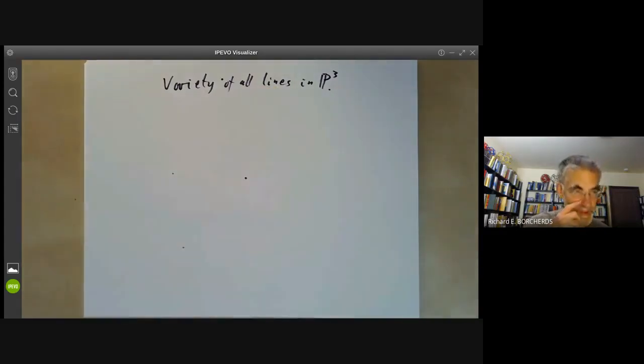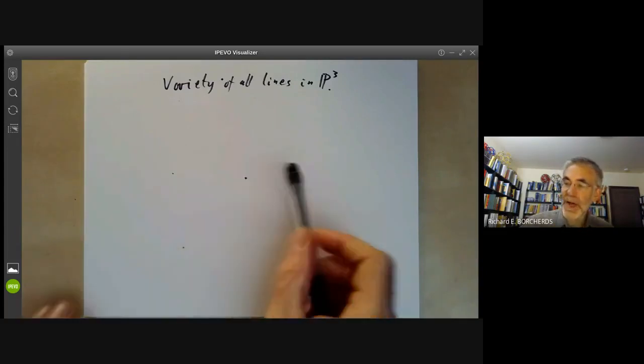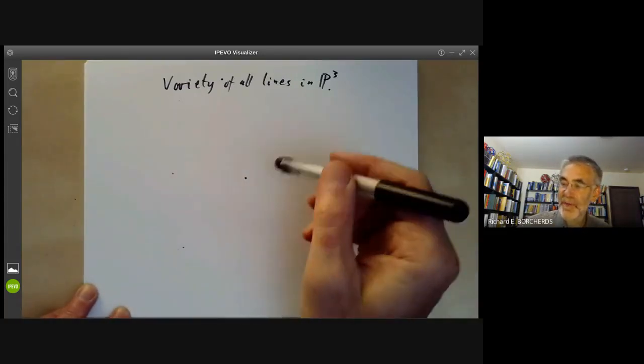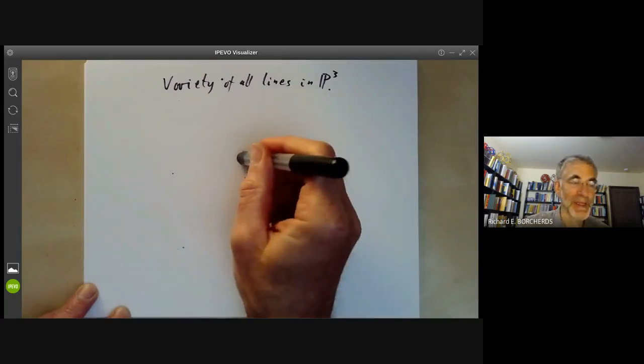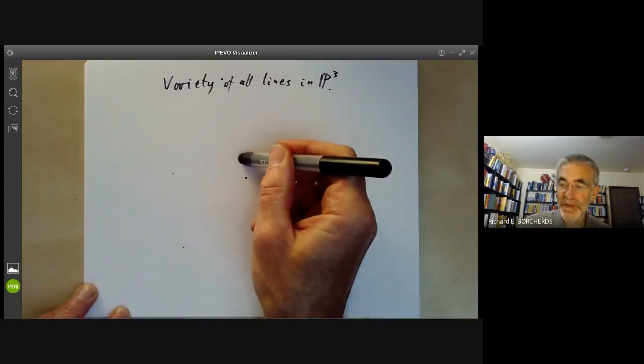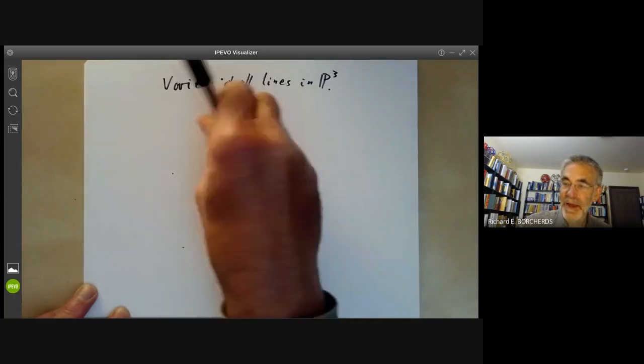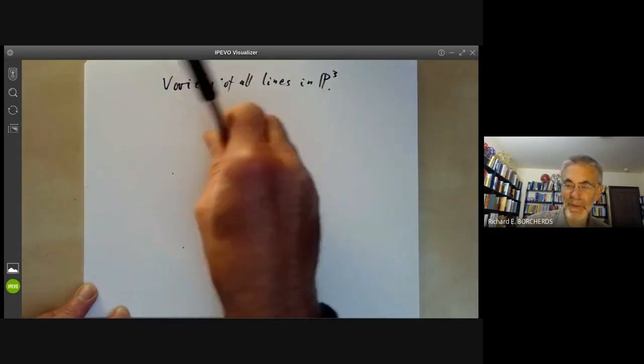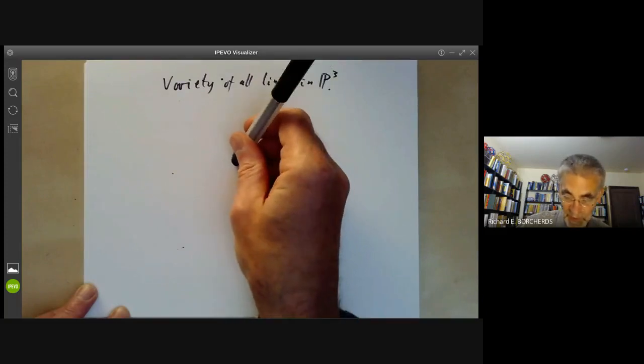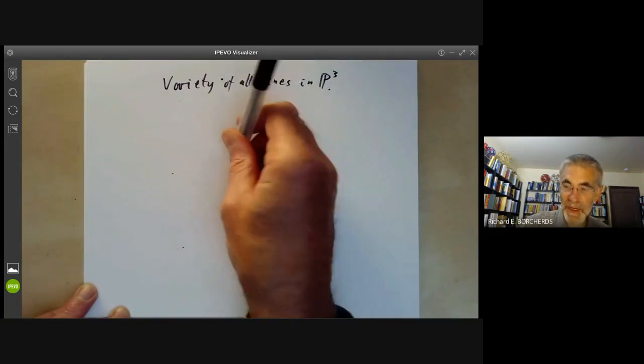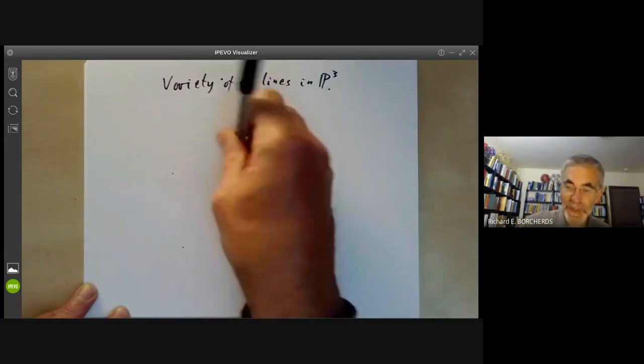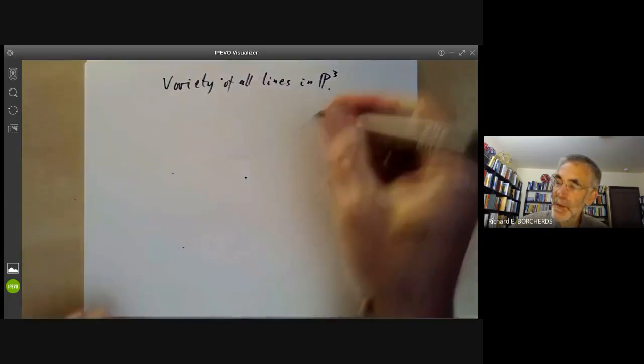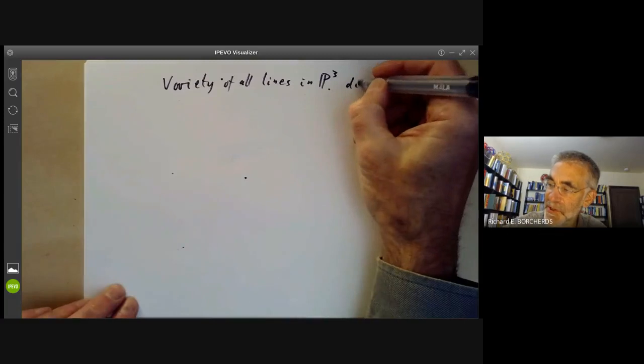If you've got a line in P3 and you take a random plane, this plane here, then the line will generically pass through a point in the plane, so that gives you two degrees of freedom. And then it can point in a direction—in ordinary Euclidean space, the direction will be a point on the sphere S2, so that gives you another two dimensions. So we expect this variety to have dimension four.